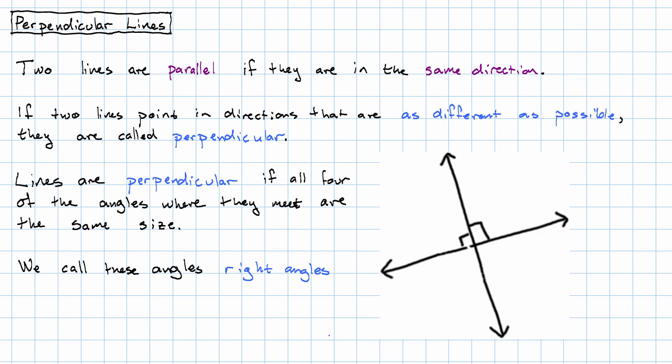We call these angles right angles, not as opposed to wrong angles or left angles or anything like that. It's kind of in the same way that we call proper fractions proper, even though it has nothing to do with their table manners. We call these right angles. If we're interested in measuring angles, a right angle measures 90 degrees.